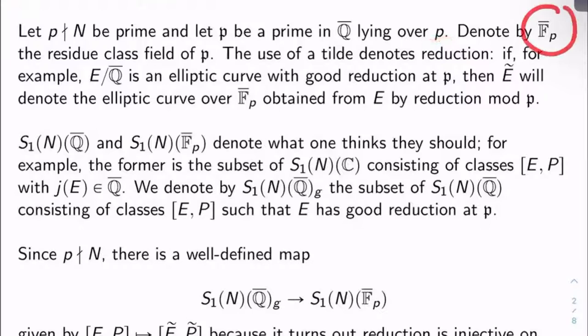From here on out, the use of a tilde will denote reduction. So what I mean, for example, is that if E over Q̄ is an elliptic curve with good reduction at ℘, E tilde will denote the elliptic curve over F_℘ obtained from E by reducing it mod ℘.